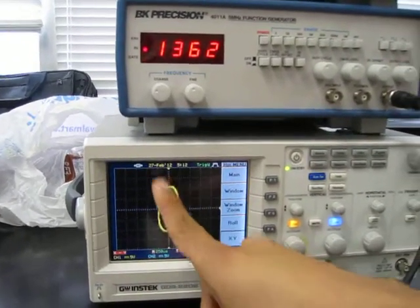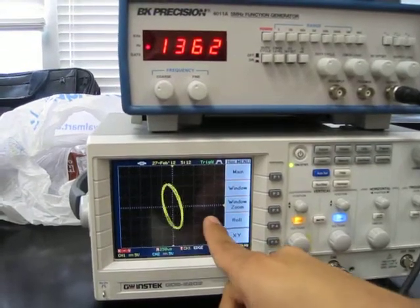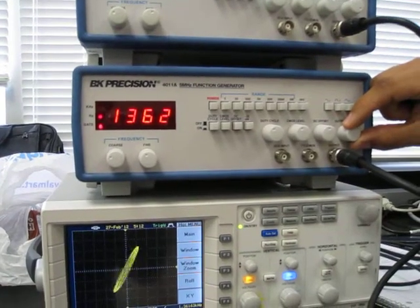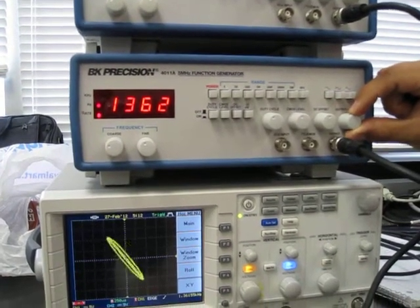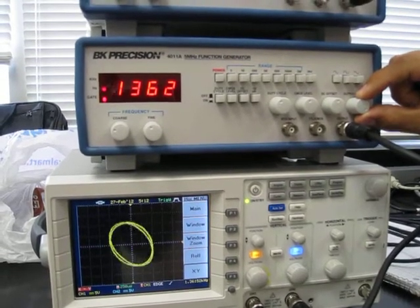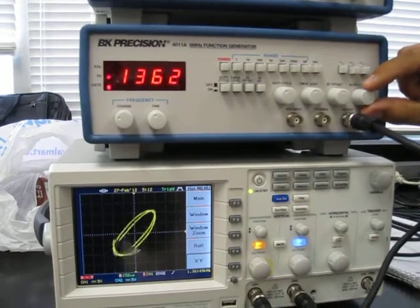On the Lissajous figure, this shows as being longer on channel 2, the Y axis, indicating it has more amplitude than the X axis, channel 1. But if I increase channel 1's amplitude as well, it will go back equal with channel 2's and make a square, showing the same amplitude.